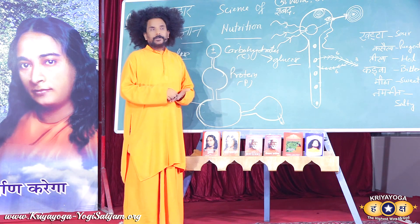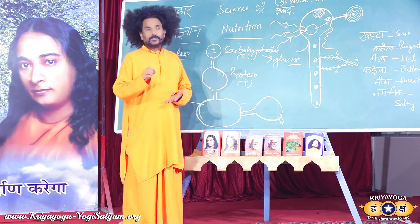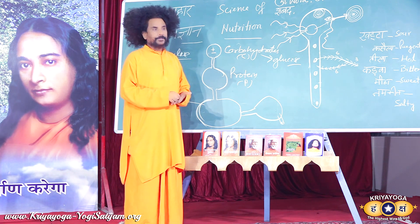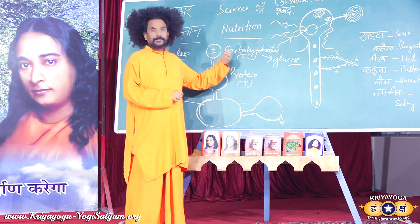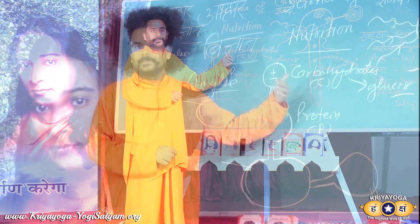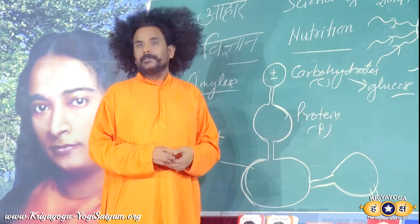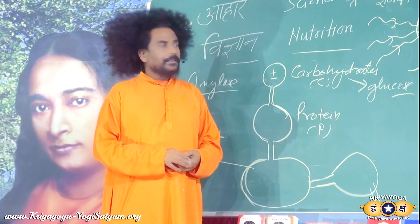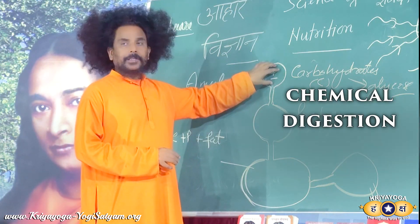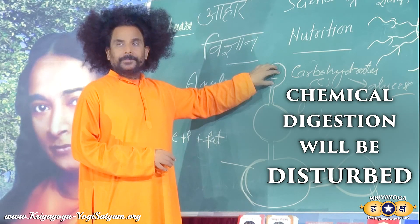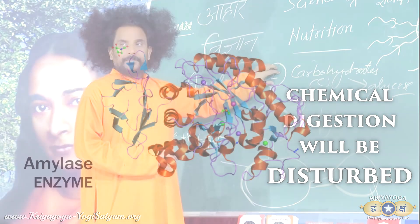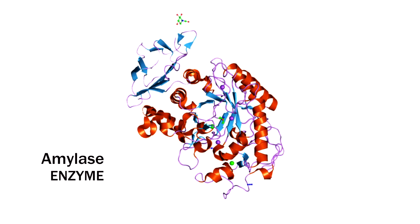If you are eating potato with sour ketchup, or rice, or wheat, or anything sour, then chemical digestion will be disturbed. We are not using the amylase enzyme properly. This is called ignorance.